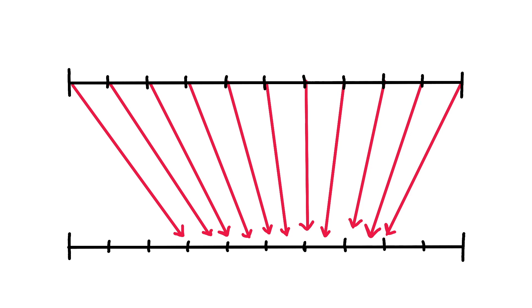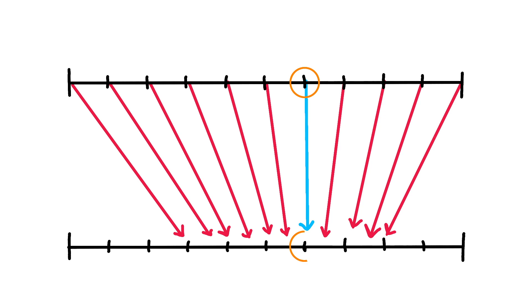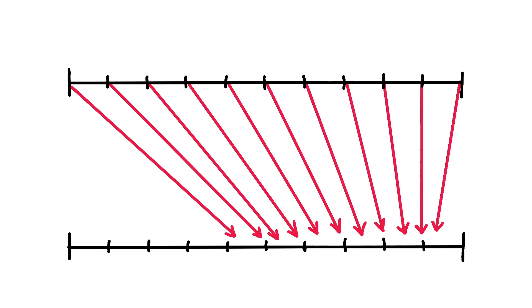Let's look at an interval of a number line. Notice one of the arrows is perfectly vertical and doesn't lean left or right — that's a fixed point. The number at the base of the arrow is being transformed into exactly the same number at the tip of the arrow. No matter what transformation we do, there will always be at least one vertical arrow.